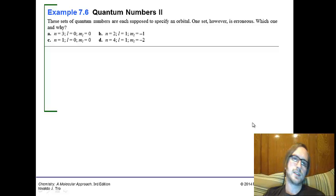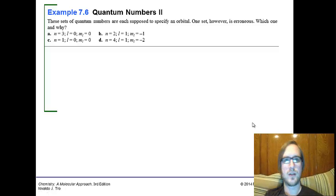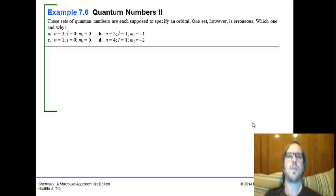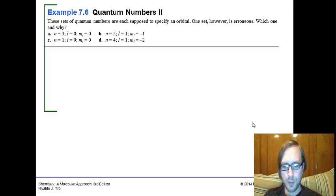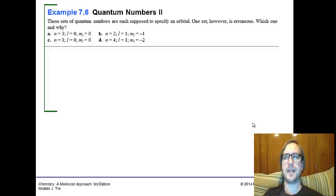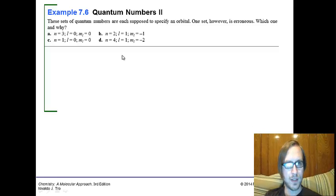Okay, Example 7.6, quantum numbers 2. These sets of quantum numbers are supposed to specify an orbital. One set, however, is erroneous. Which one and why? All right, so we're looking at them. We know a couple things. We know that n can be any integer greater than or equal to 1. So if we look at these, all the n's—3, 1, 2, 4—they're all integers, whole numbers, and they're all greater than or equal to 1. So the n's all look good.